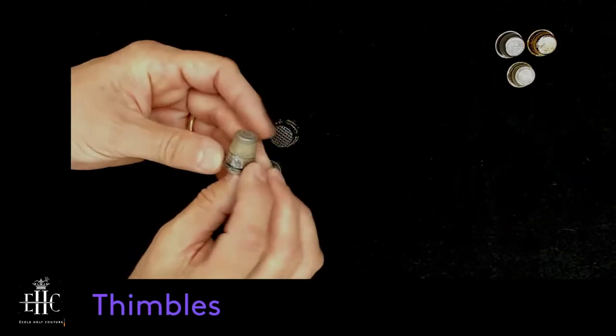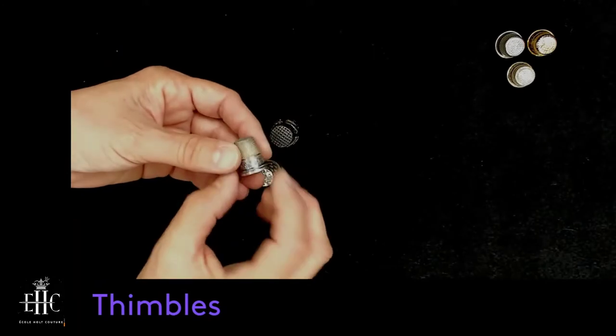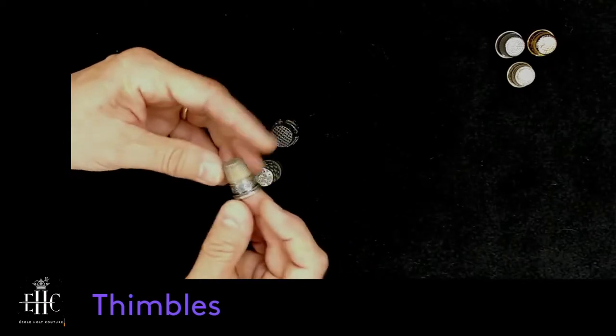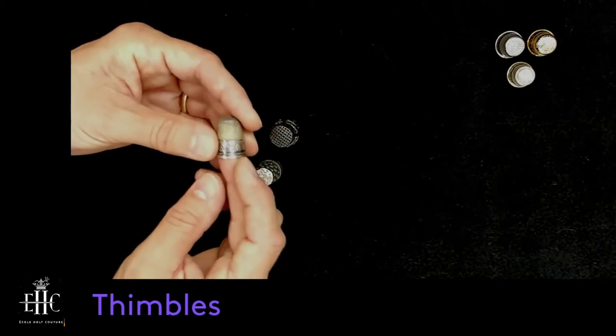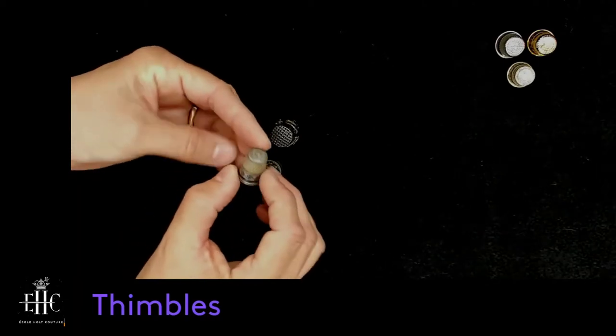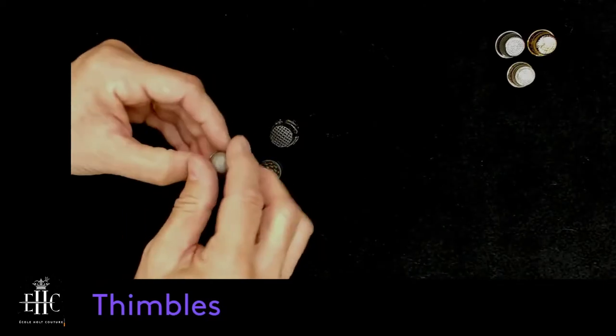It's all tarnished, so I don't recommend using silver if you can avoid it because of the tarnishing that happens. The tarnish transfers onto fabric, and the last thing you want to have is black marks on your fabric. As beautiful as they are, beautiful gifts, and they're great reminders, I don't like to use them.